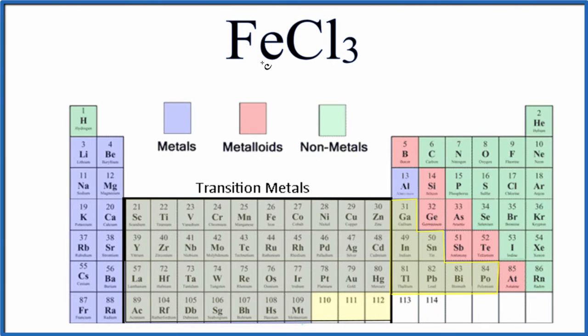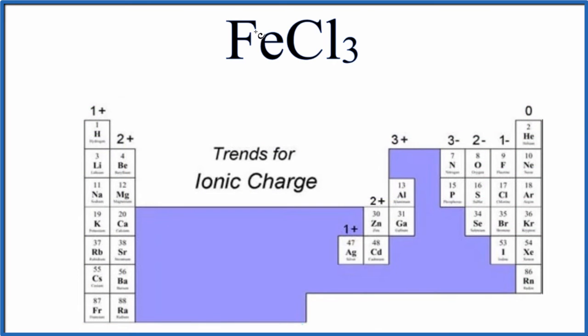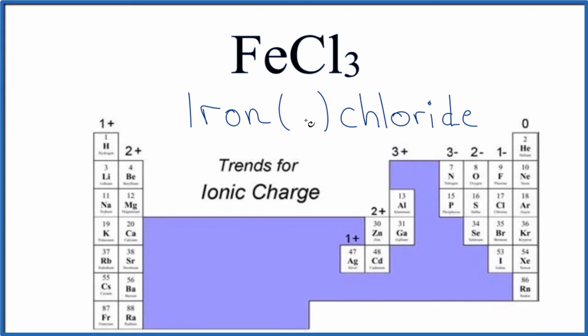So let's name FeCl3. There's iron, our transition metal. So we're going to write iron and chlorine. And for the non-metal, we replace the I-N-E with I-D-E. Since we have a transition metal, we'll have Roman numerals. To find out what the Roman numerals are, we need to look at the chlorine.